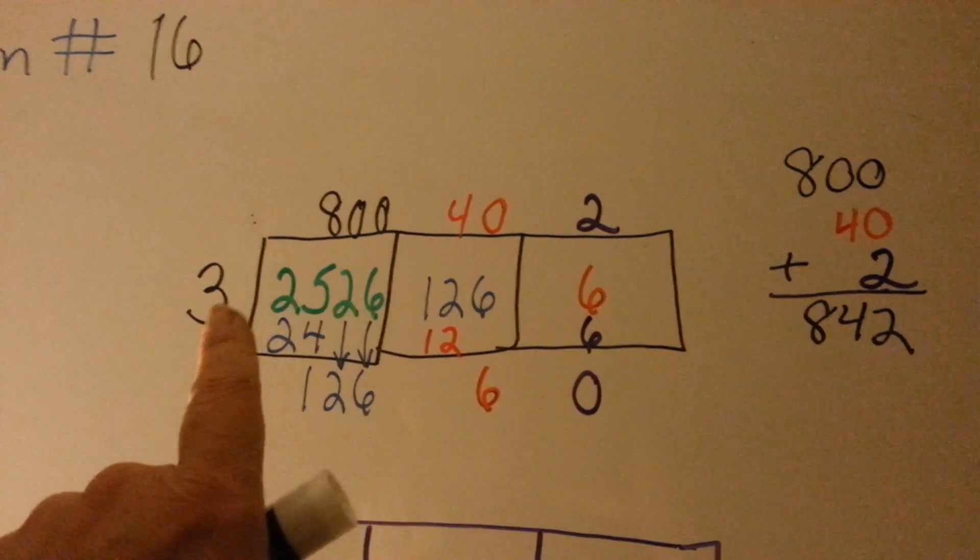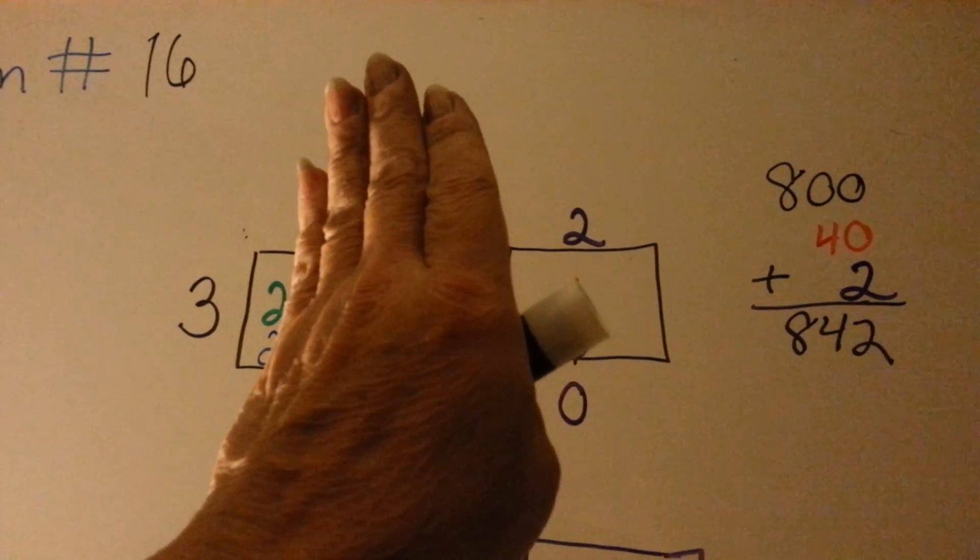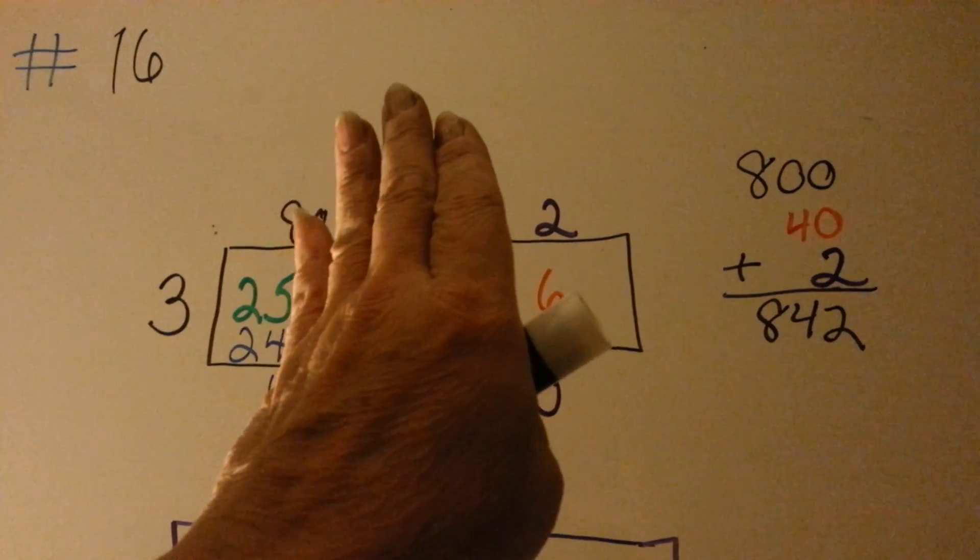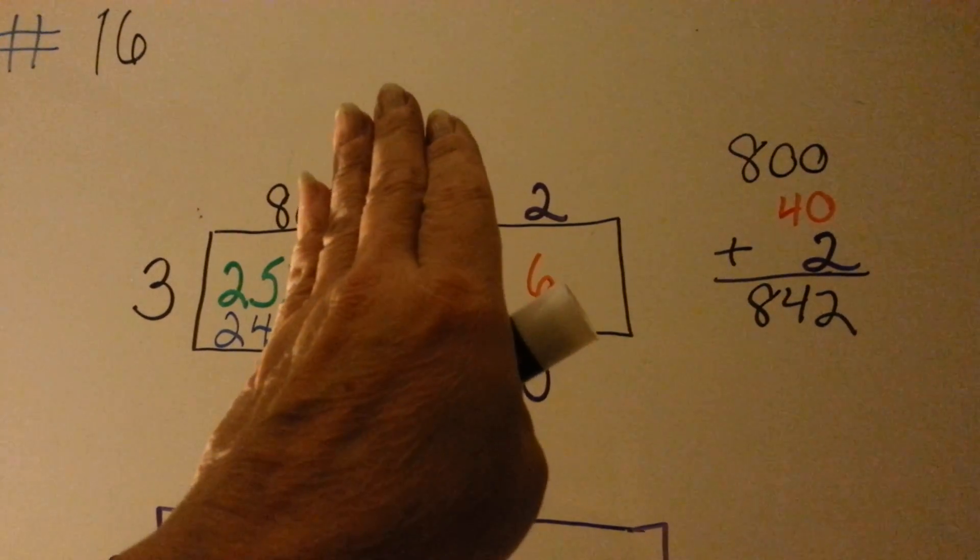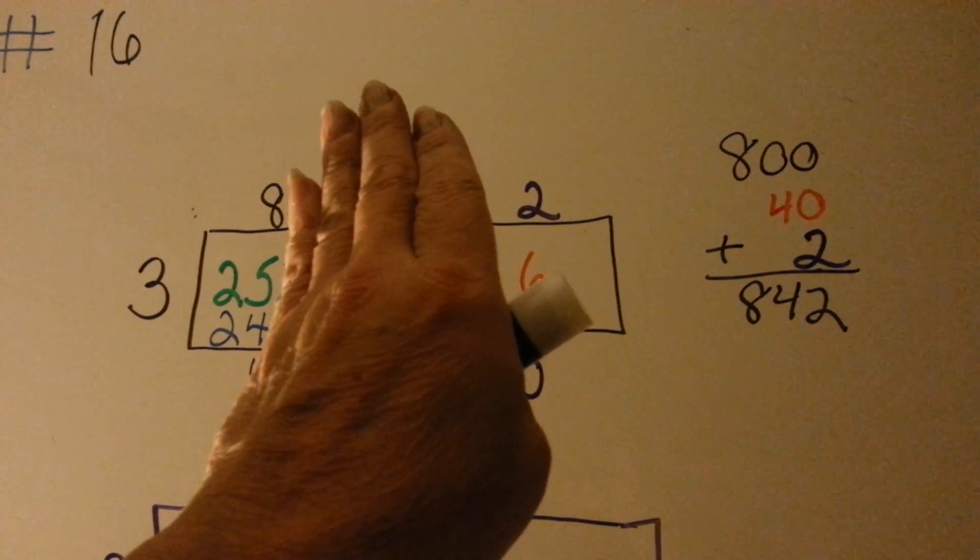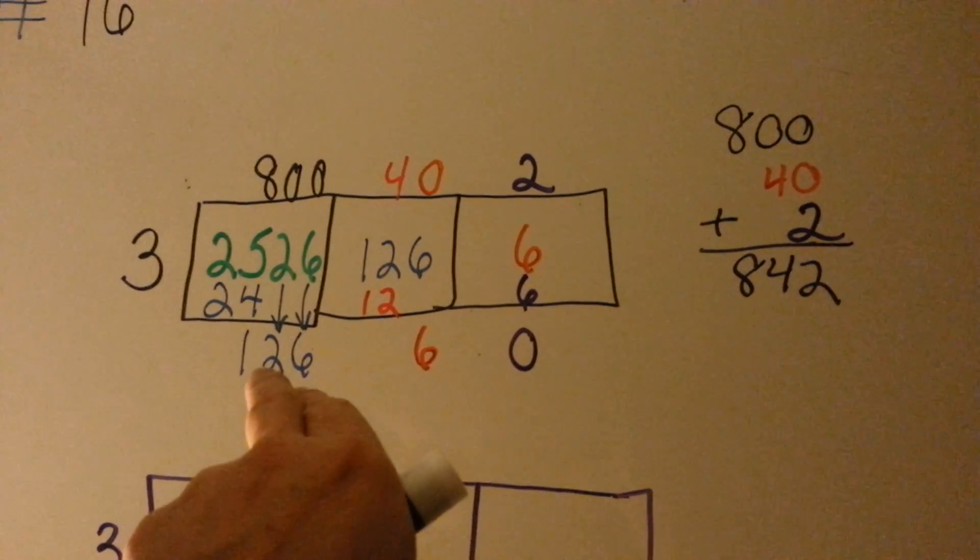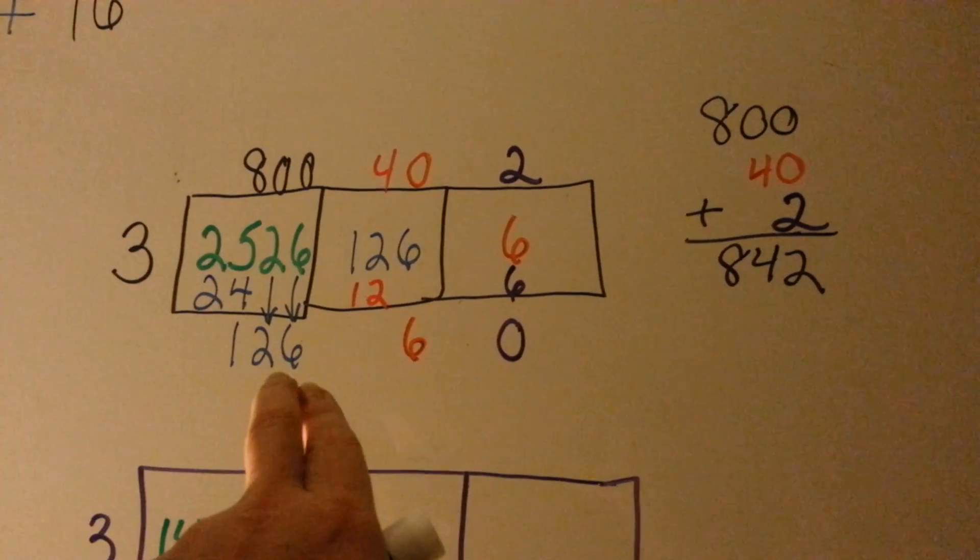As you can see, 3 cannot go into 2. 3 can go into 25 eight times, and that's why there's an 8 up there. 3 times 8 is 24, and that's why there's a 24 underneath the green 25. You do your subtraction, and then you bring the other two digits down.